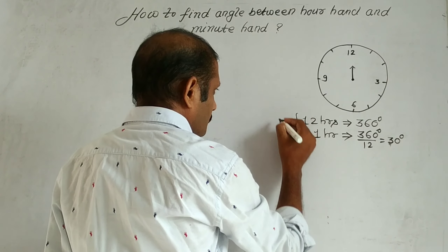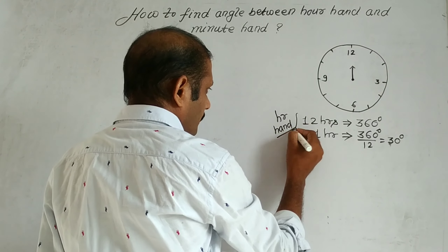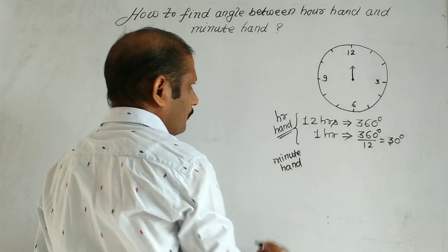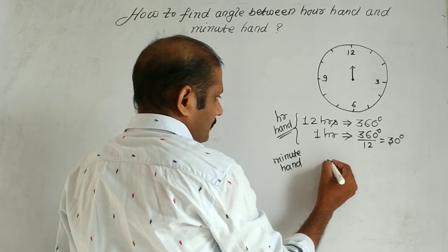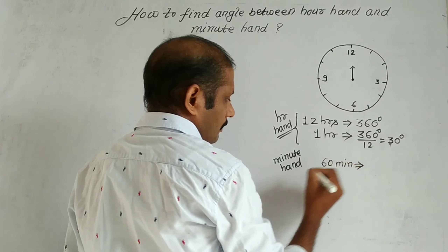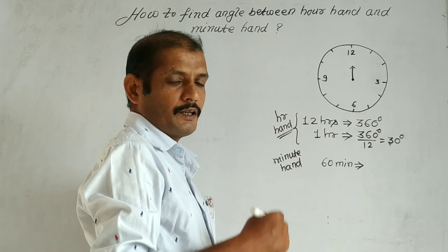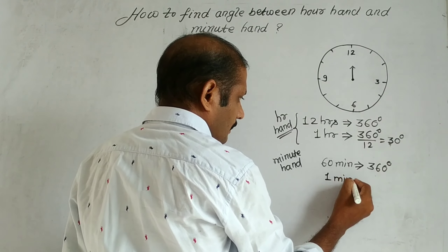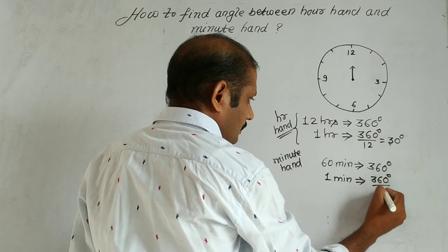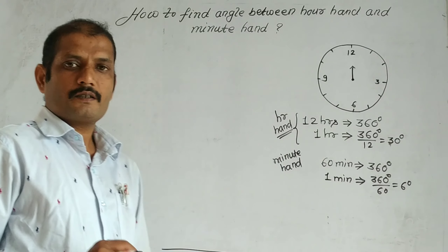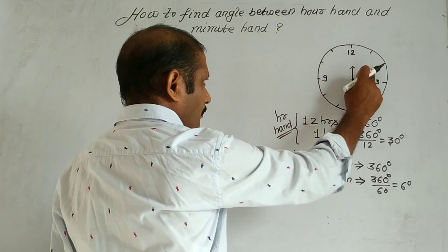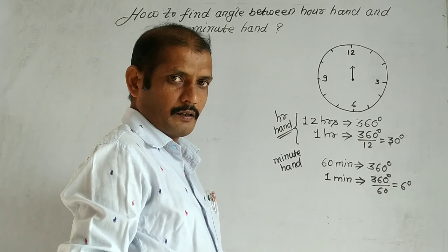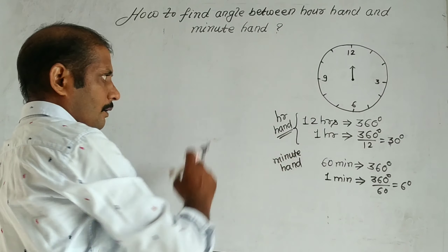This was about the hour hand. Now we will talk about the minute hand. When 1 hour completes, the minute hand completes 1 full rotation. It means in 60 minutes, the minute hand completes 360 degrees. So in 1 minute, the minute hand forms 360 divided by 60, which equals 6 degrees. Every 5-minute mark, as the minute hand advances 1 minute at a time, it builds up 6 degrees of angle each minute.